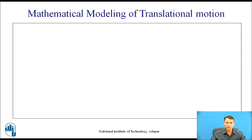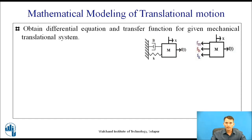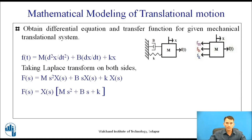Let us see mathematical modeling of translational motion. We need to obtain the differential equation and transfer function for a given mechanical translation system. This is an example we have seen in the last session, so take a pause and recall and write the differential equation. For the given diagram, f(t) = m·(d²x/dt²) for the mass, plus b·(dx/dt) for the damper, plus k·x for the spring. Taking the Laplace transform on both sides and taking X(s) common, we get the equation as shown.